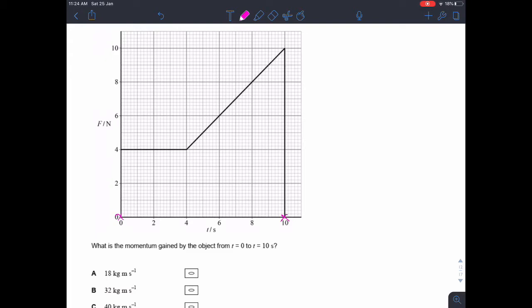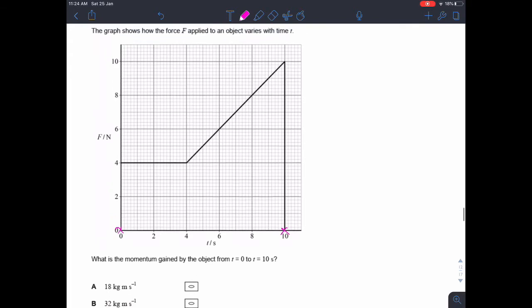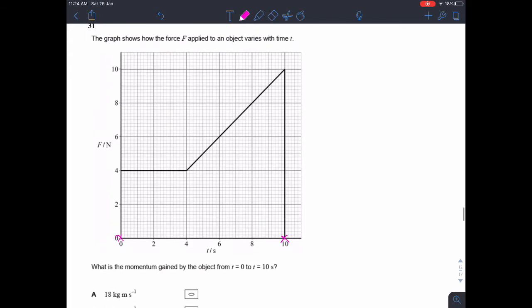So the momentum gained by the object through the entire graph. Well, we know that the change in momentum is ft. And we also know that if we need to multiply the two axes together, what we need to do to find the total is find the area under the graph.